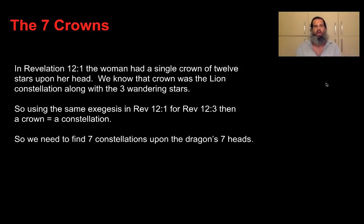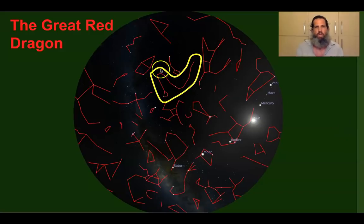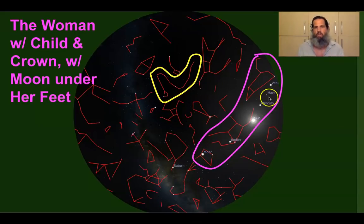Now, the last part we need to identify is the seven crowns. In Revelation 12, verse 1, the woman had a single crown of twelve stars upon her head. We know that the crown was the lion constellation with the three wandering stars to make up twelve stars. So, using this same example of Revelation 12, verse 1, for chapter 12, verse 3, then a crown equals a constellation. What we need to do is find seven constellations upon the dragon's head.